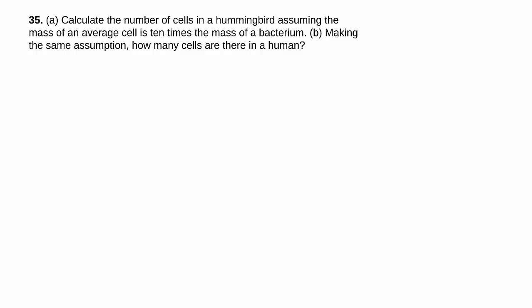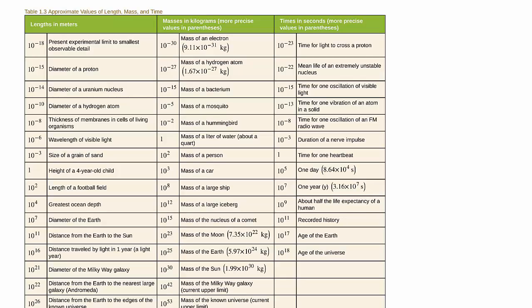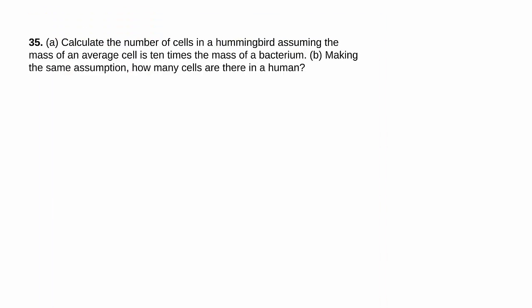Well all this is referring back to table 1.3 of your textbook which is here, and they're referring to the mass of a bacterium, the mass of a hummingbird, and the mass of a person. So those are the things we need. So let's go back and note those down.